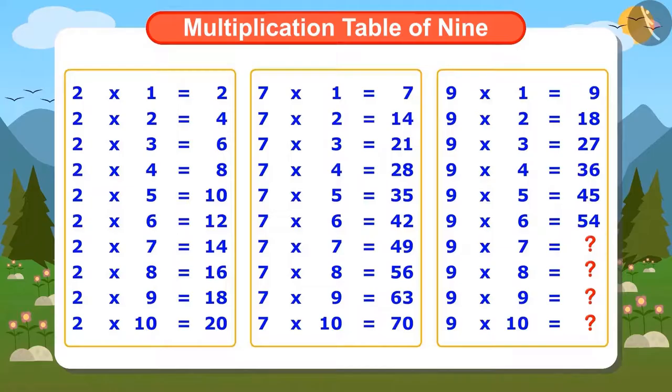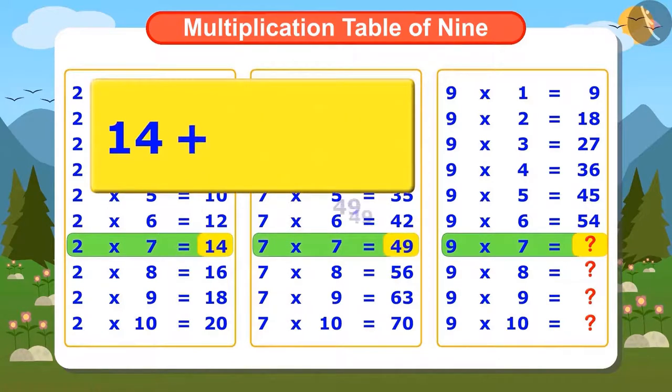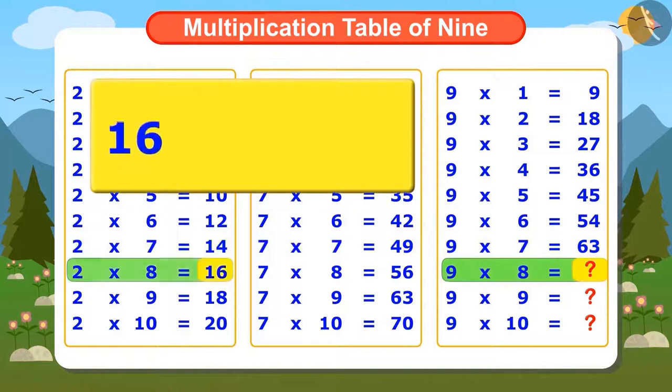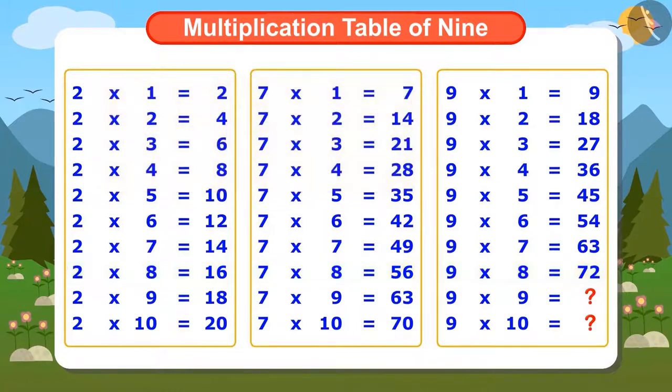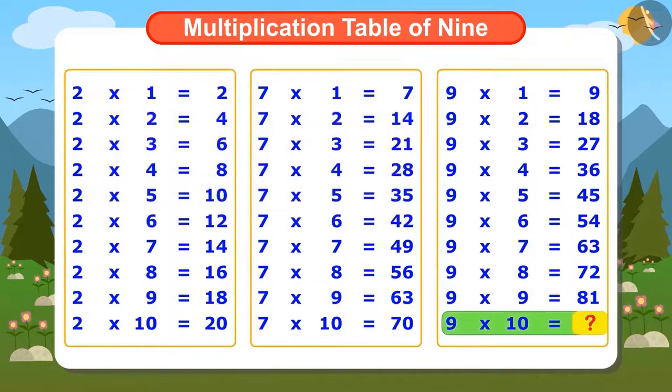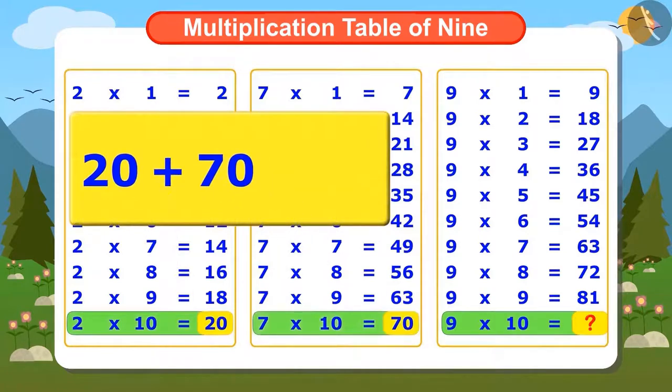Vandana wants to write the rest of the 4 numbers of the table 9 in a similar way. Now to find out 7 times 9, let us add the 7th number of the table of 2 and 7, 14 and 49. Answer is 63. If we add 16 and 56 to find 8 times 9, then the answer would be 72. To find 9 times 9, we will add 18 and 63. The answer is 81. Now let us add 20 and 70 to find the last number which is 90.